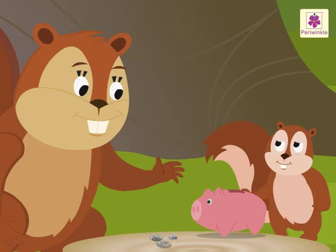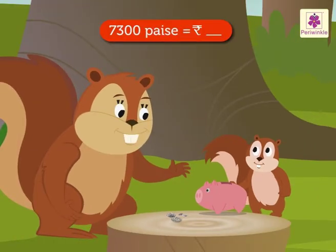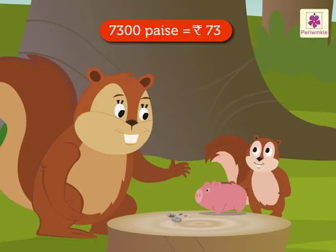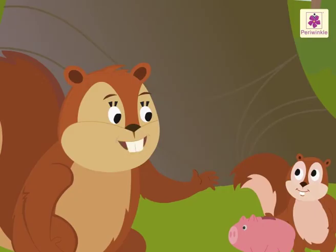Correct. Try one more. How many rupees are there in seven thousand three hundred paise? Seven thousand three hundred paise is equal to seventy-three rupees. Right. You have understood how to convert paise to rupees!